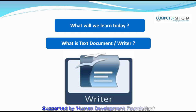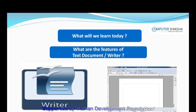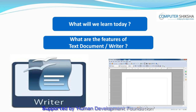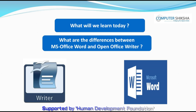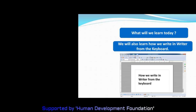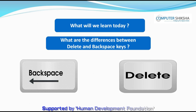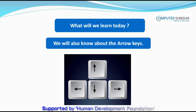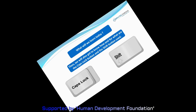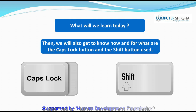What we will learn in today's class is: what is text document or Writer, what are the features of text document or Writer, what are the differences between MS Office Word and Open Office Writer, how do we open Writer. We will also learn about the documents in Writer and about the use of the keyboard, how we write in Writer from the keyboard, the differences between Delete and Backspace keys, the arrow keys, and how the caps lock button and the shift button are used.